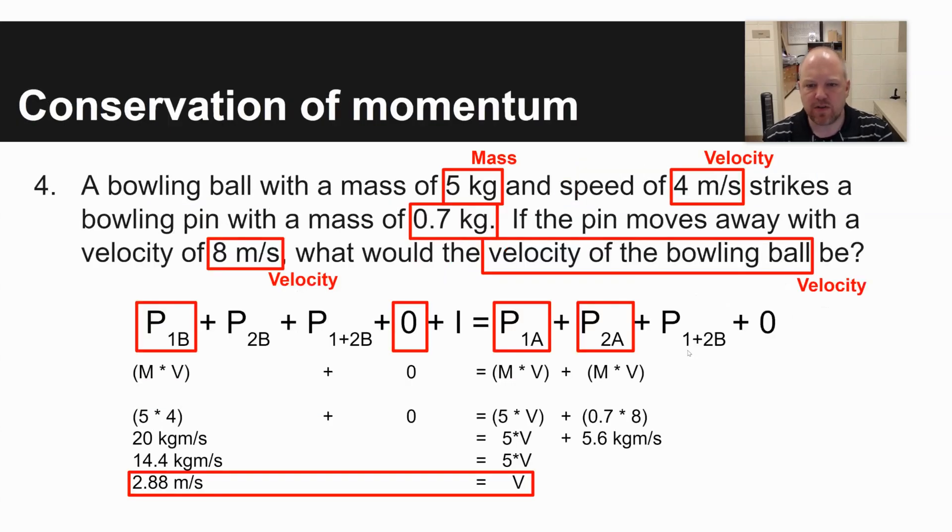The last problem here is definitely the most difficult because you need to use that big equation that I had on the first slide. But it says a bowling ball with a mass of 5 kilograms and a speed of 4 meters per second strikes a bowling pin with a mass of 0.7 kilograms. If the pin moves away with a velocity of 8 meters per second, what would the velocity of the bowling ball be? And so you have numerous masses here: mass of bowling ball, mass of bowling pin, velocity of bowling ball before, velocity of pin afterwards. And you're asked to solve for the velocity of the bowling ball afterwards. And so this is a conservation of momentum problem. Your momentum before is equal to your momentum afterwards.